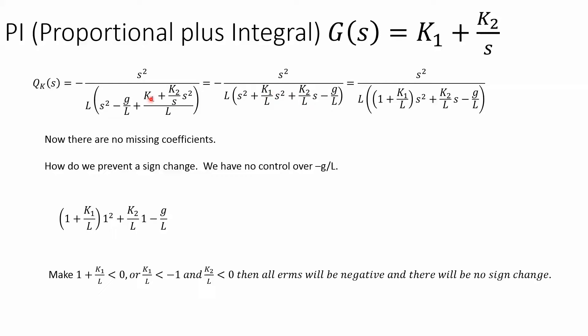When I multiply through, I will also get an s term. K₂/s times s² is K₂s. I've manipulated the characteristic equation where I have (1 + K₁/L) times s², K₂/L times s, minus g/L. So I have all three terms and it looks like I have constants I can manipulate. There's no missing coefficients. I can't really control -g/L. Length is positive and gravity is negative.